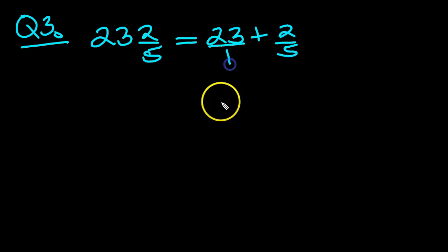The 23 itself you can write as 23 over 1, so we can put that there. Now we have to change this to fifths to get the same fraction so that we can add them.